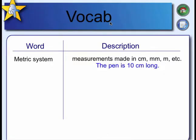Let's take a look at some vocab that we're going to need today. Sometimes we use the metric system to measure. The metric system involves measurements taken or made in centimeters, millimeters, meters, and some other units too. But these are the ones you're going to see frequently today.